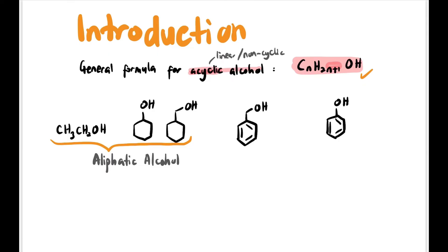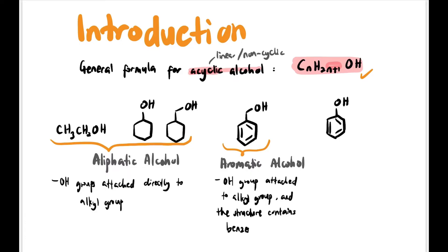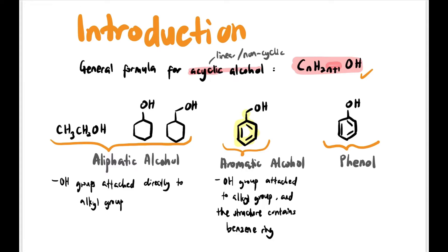The first is aliphatic alcohol, where the OH group is attached directly to an alkyl group — the alkyl group can be cyclic or linear. Next is aromatic alcohol, where the OH group is attached to an alkyl group that contains a benzene ring. The last one is phenol, which is special because the OH group is directly attached to the benzene ring — it is called phenol, not aromatic alcohol.